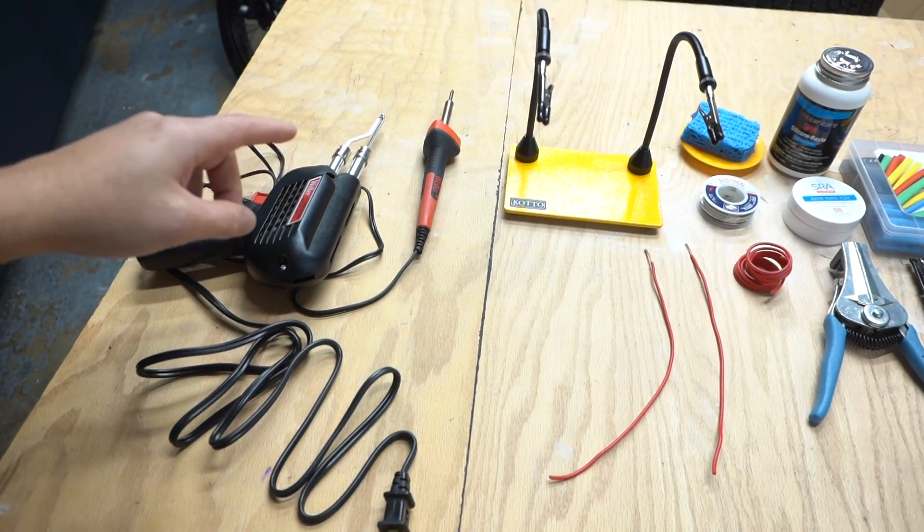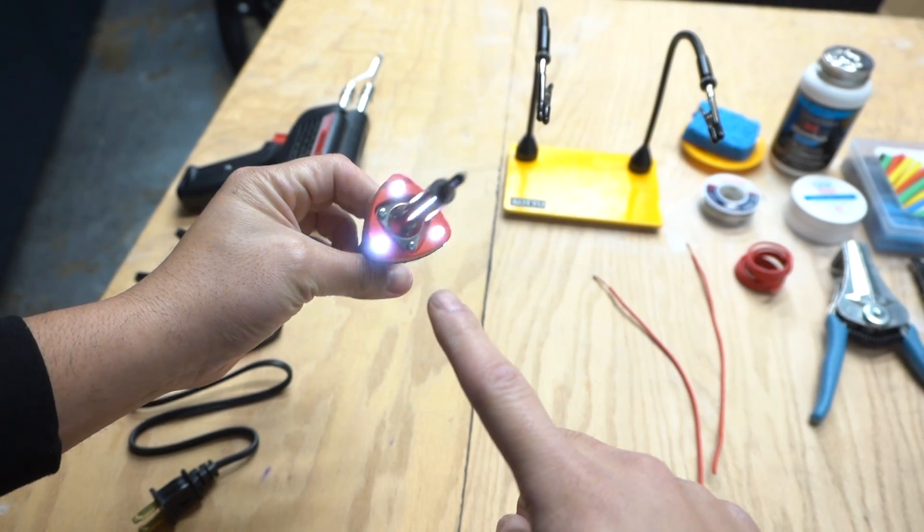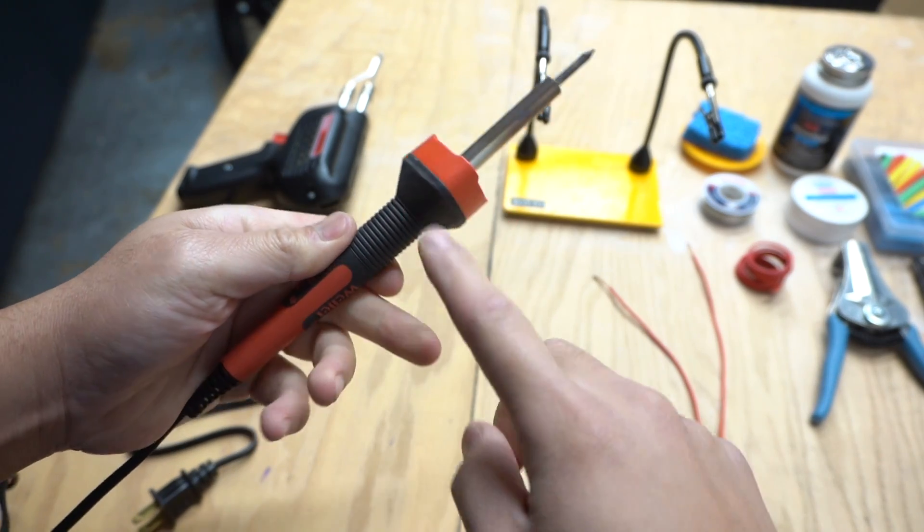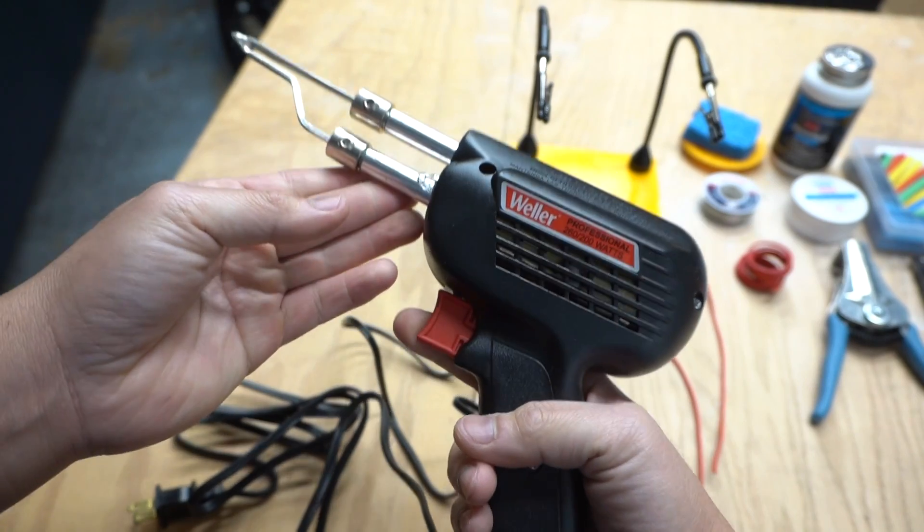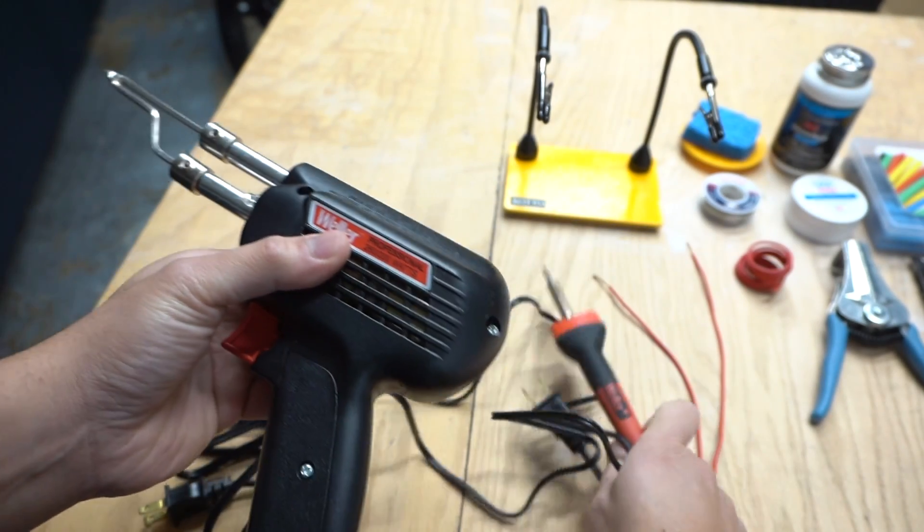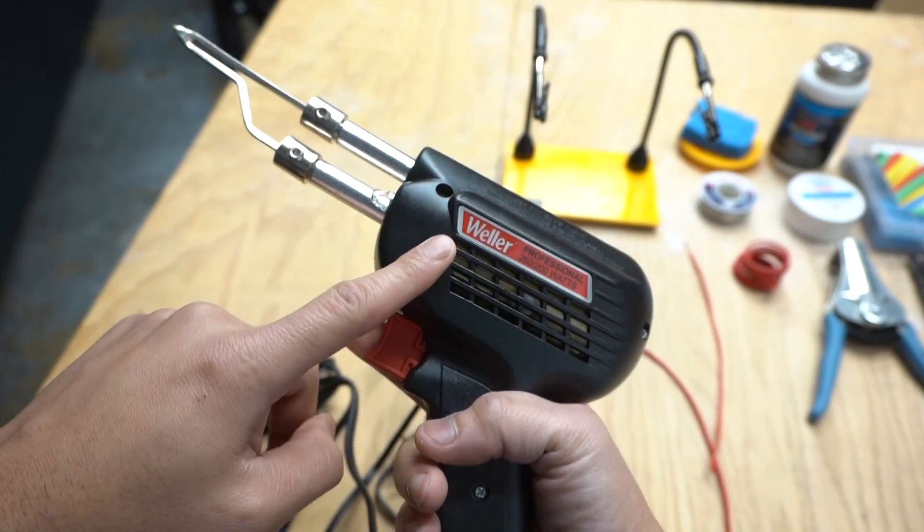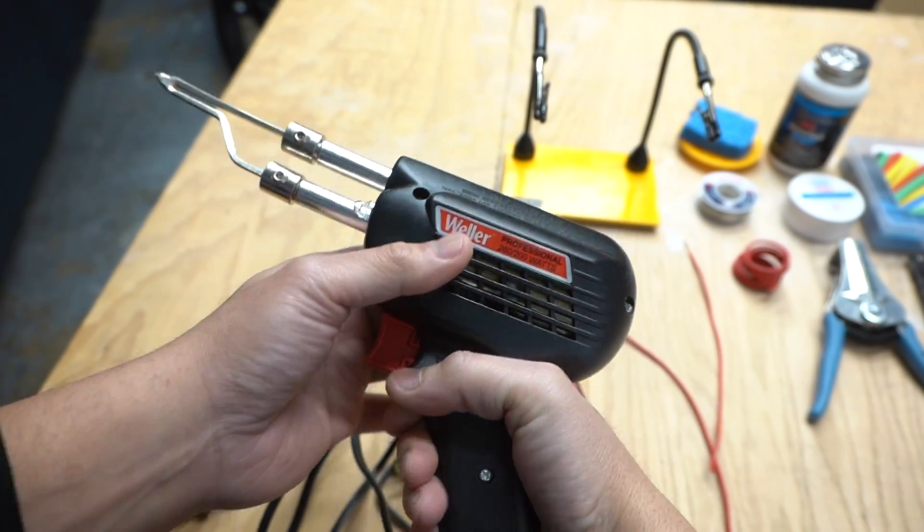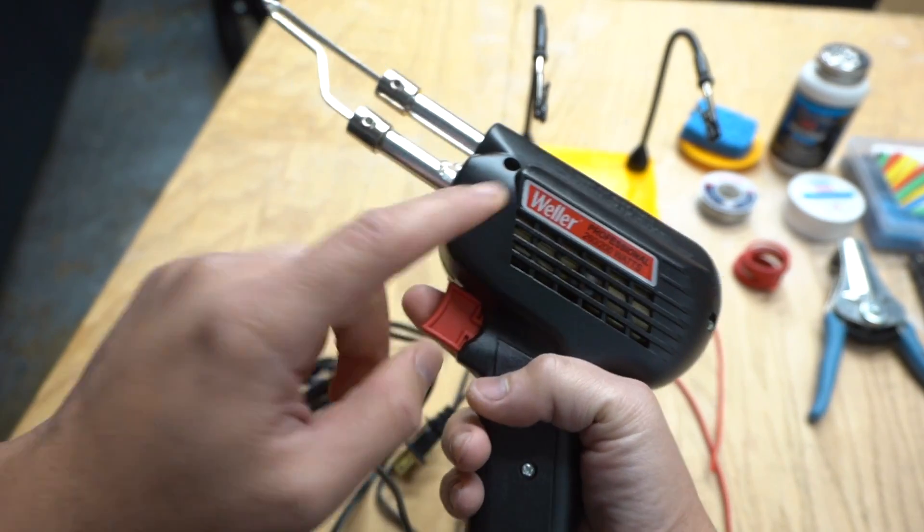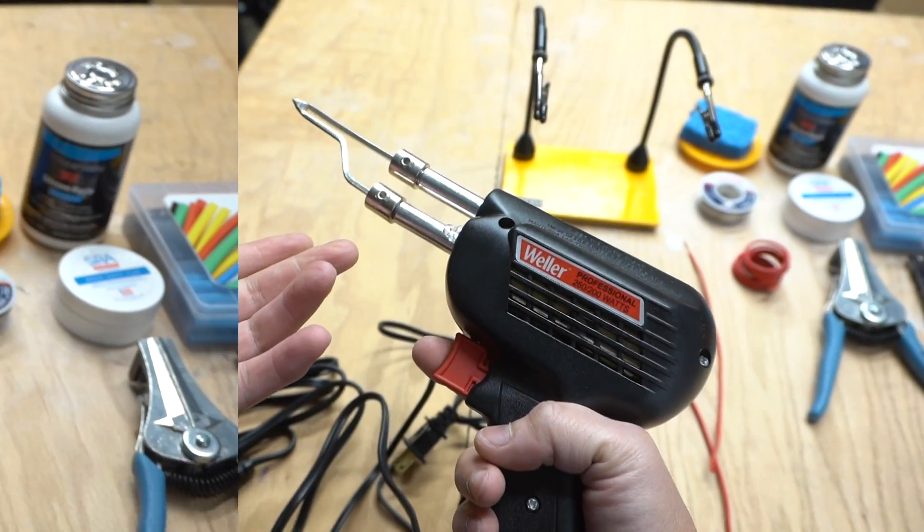Let's start off with the soldering iron. This actually has some LEDs at the tip. Now this is used if you're using smaller gauge wires, but if you're using thicker gauge wires, I think that the soldering gun by Welder is best for you. Very heavy duty and a lot more powerful. So for this demonstration, I'm going to be using the solder gun just because it's a lot more powerful.